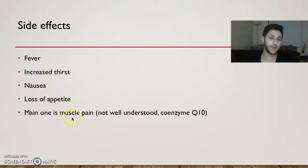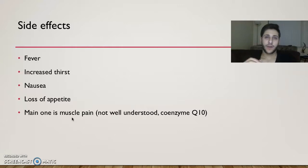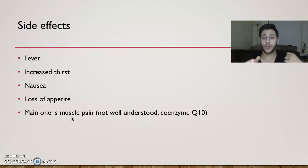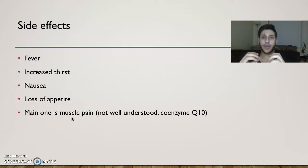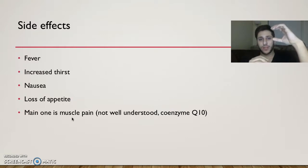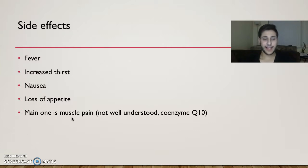The main side effect to focus on is muscle pain. Muscle pain is not really well understood; however, it is linked to coenzyme Q10. When we block the cholesterol biosynthetic pathway at the beginning, coenzyme Q10 — which is important for energy production in the muscles — is thought to be produced later on in the biosynthetic pathway. Since we're blocking that pathway at the beginning, we're not producing coenzyme Q10, the muscles cannot use energy, they get fatigued, and that's why we get muscle pain.